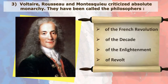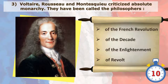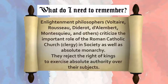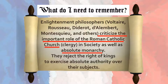Voltaire, Rousseau, and Montesquieu criticized absolute monarchy — they have been called the philosophers of the Enlightenment. Enlightenment philosophers criticize the important role of the Roman Catholic Church in society, as well as absolute monarchy. They reject the right of kings to exercise absolute authority over their subjects.